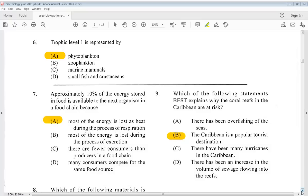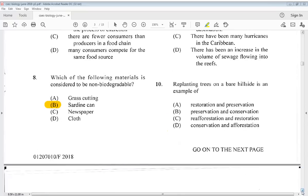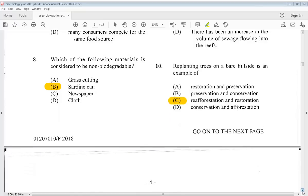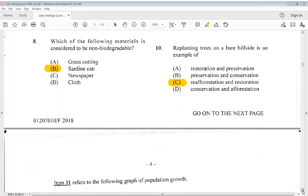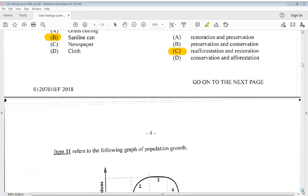10 says, replanting trees on a burial site is an example of restoration and preservation, preservation and conservation, reafforestation and restoration, or conservation and afforestation? The answer is C. And also, please remember, this is part one. So, it is very important that you subscribe to the channel to receive part two.